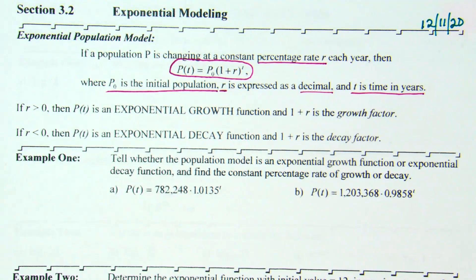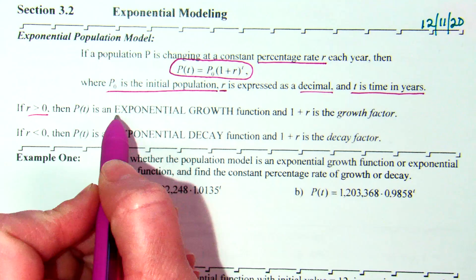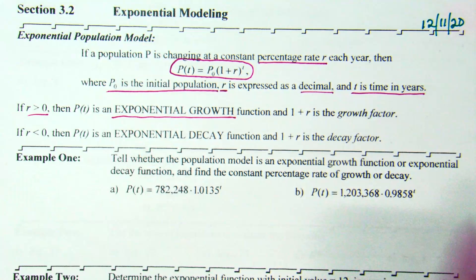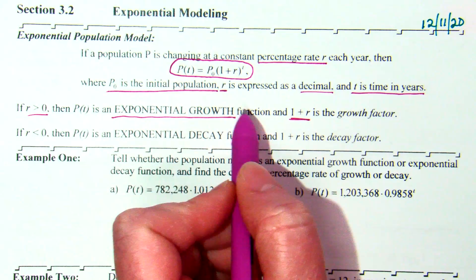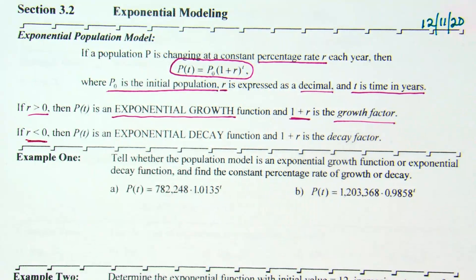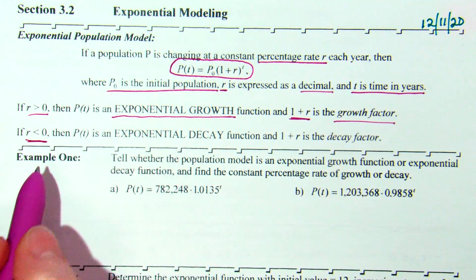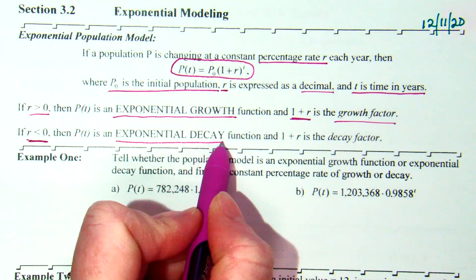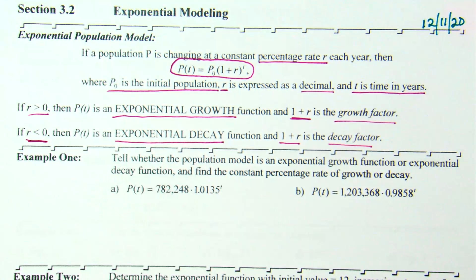Now, if R is greater than 0, so when R is your decimal form, if R is greater than 0, then we are talking about a situation of exponential growth. And in that case, 1 plus R, which is what is in the parentheses, is what you would use to find the growth factor. In just the same bit, if R is less than 0, under 100%, this is exponential decay. 1 plus R is still that important factor, except we call it the decay factor in this case.